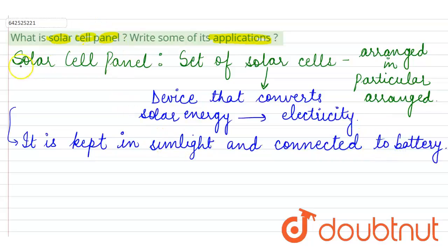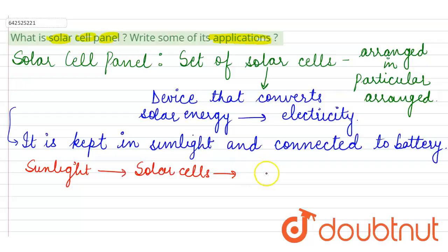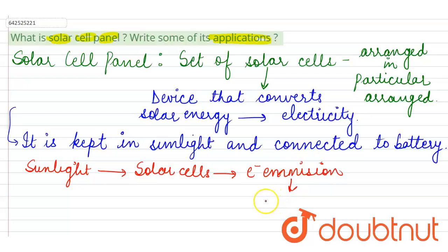In the solar cell panel, sunlight falls upon the solar cells, causing the emission of electrons. This electron emission leads to the flow of electric current, which gives us electricity.